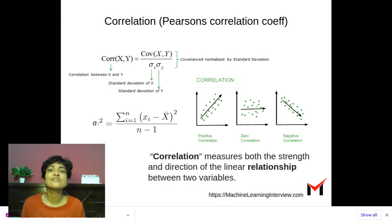What is correlation? Correlation measures both the direction and the strength of linear relationship between two variables.